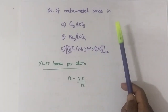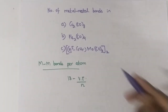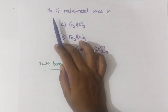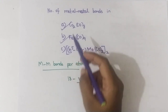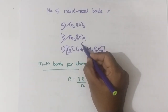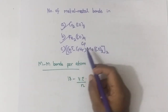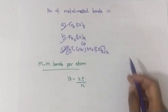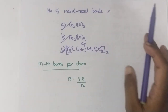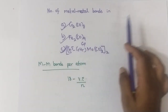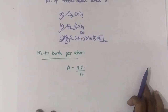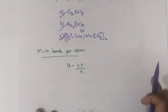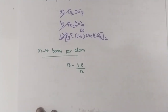This is a question for you. You are going to find the number of metal-metal bonds in: Co₂CO₈, Fe₂CO₉, and [η⁵-C₅H₅ (Cp, cyclopentadienyl ligand)] complexes. Try to share your answers in the comment section so that I can check whether they are correct or not.